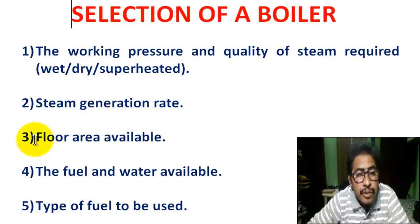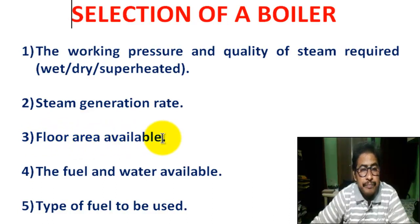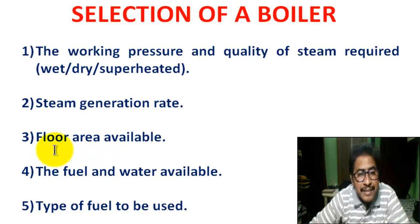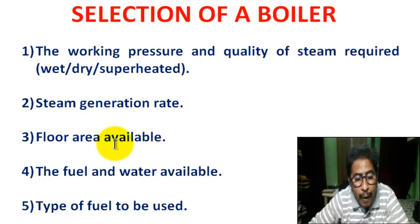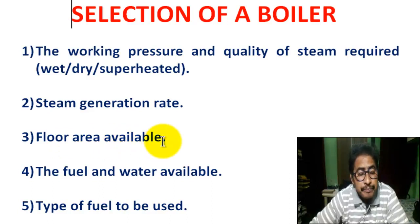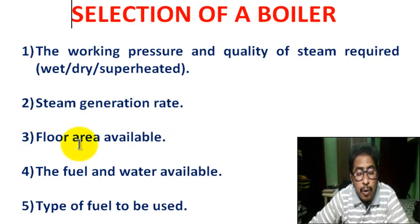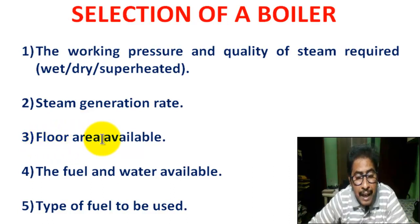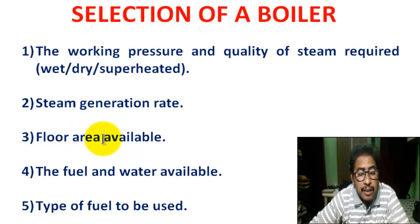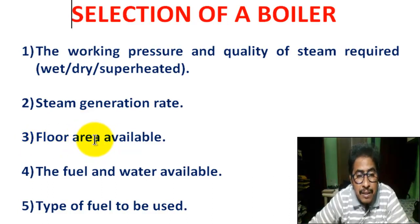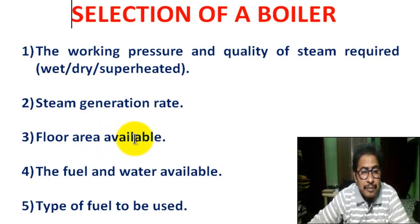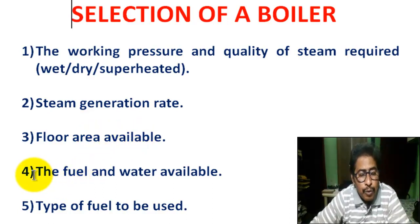Number 3: floor area available. This refers to the necessary floor space occupied by the boiler. For a fire tube boiler, more floor area is required. For a water tube boiler, less floor area is required.